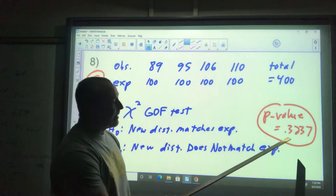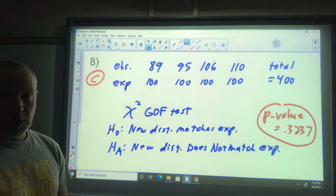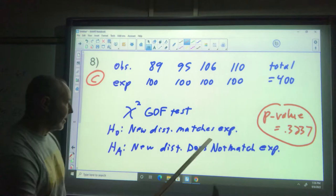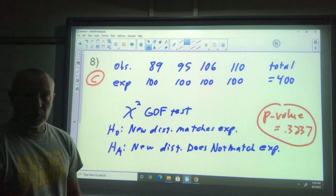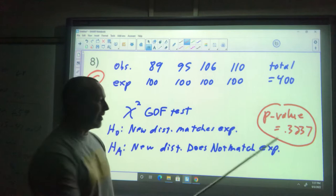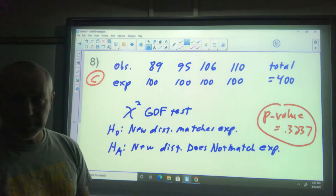If you run that test on your calculator, you should see a p-value of 0.3237. That is high. If it's low we reject, if it's high we fail to reject. We don't have any reason to believe it's incorrect. Our findings are not significant.